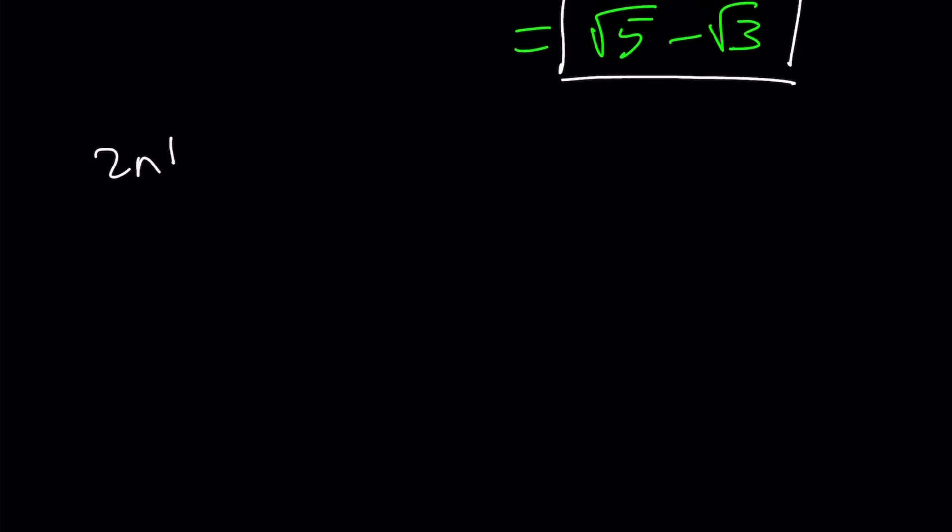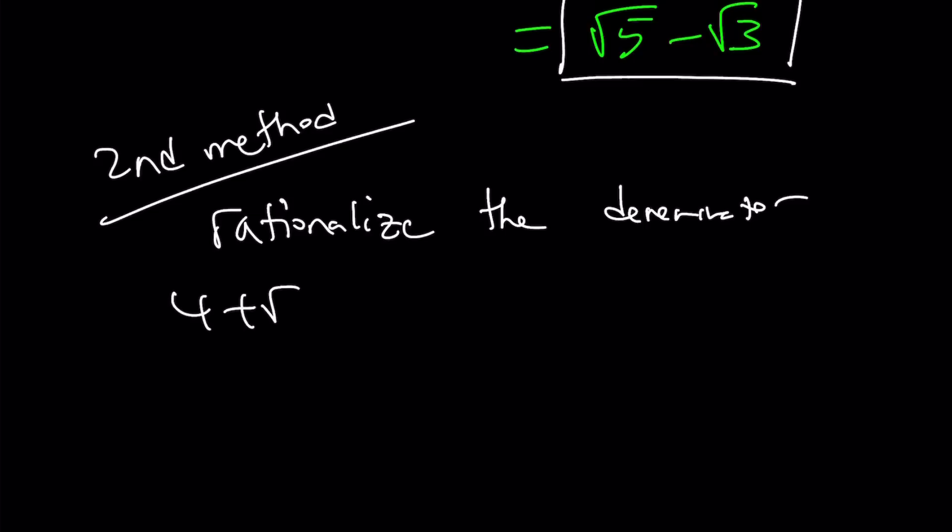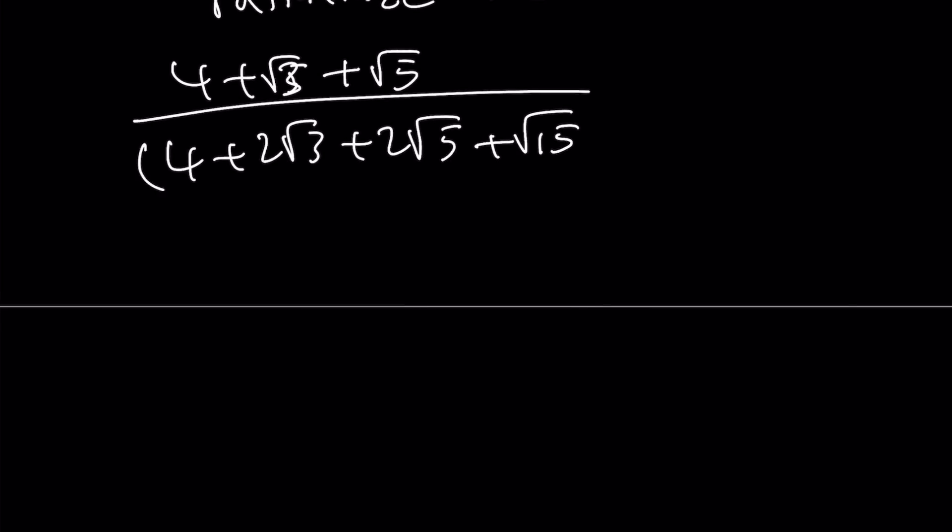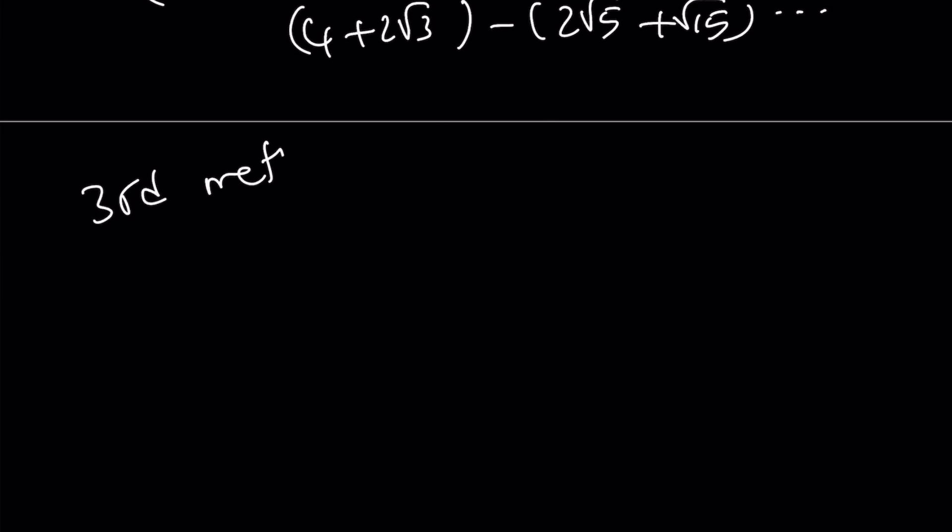I just want to briefly mention the second method. The second method is basically rationalizing the denominator. Now, what do I mean by that? So we have the following expression. Notice that the denominator is a radical. So you can basically start by looking for something like, hey, I want to put these two together and put these two together and look for something like 4 plus 2 root 3 minus 2 root 5 plus root 15, multiply by that, and you're going to get another radical and keep doing it until you get an integer or a rational number. But that's going to take a long, long time. So let's get into the third method.